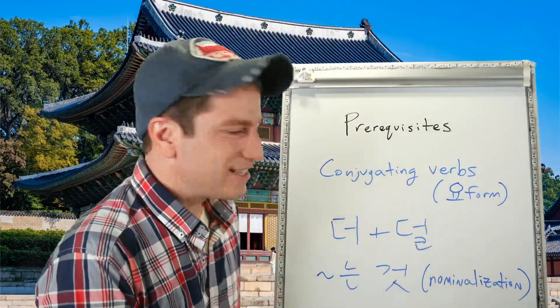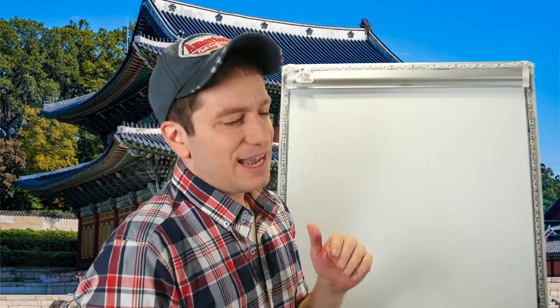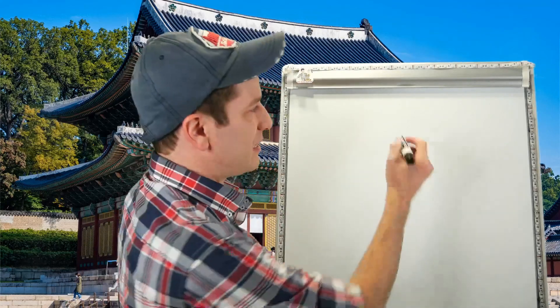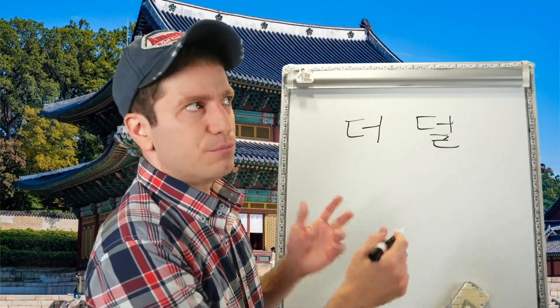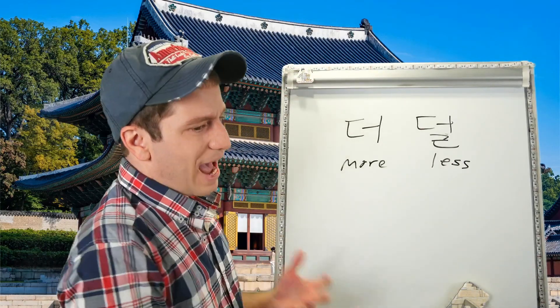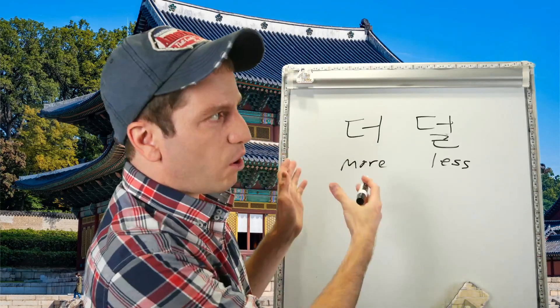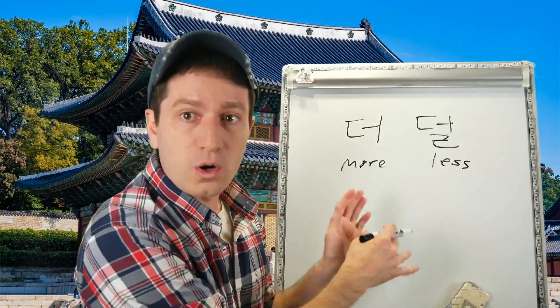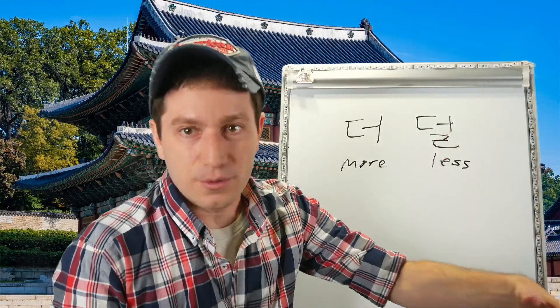Welcome. Let's get started with the lesson today. We're going to be learning how to compare things. I've already made a video about how to compare things — you can watch my live stream from December 16, 2018. In that video, we talk about how to use the adverbs 더 and 덜, which mean more and less. Adverbs are used directly before a verb, so 더 plus verb or 덜 plus verb gives you more or less of that verb.